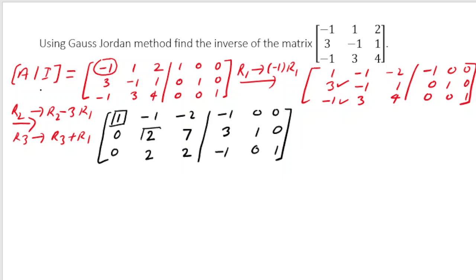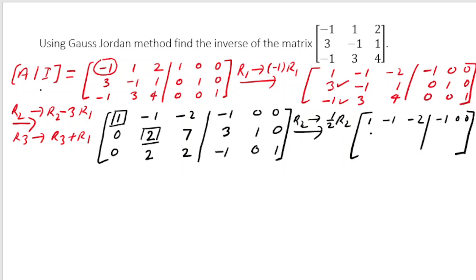Now the (1,1) position is 1 and everything below it is 0. I go to the (2,2) position and need to make it 1. To do so I multiply R2 by 1/2. The matrix becomes: R1 unchanged as 1, minus 1, minus 2, minus 1, 0, 0; R2 becomes 0, 1, 7/2, 3/2, 1/2, 0; and R3 remains 0, 2, 2, minus 1, 0, 1.